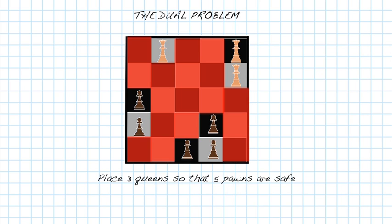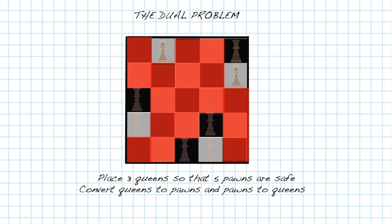Why does this help? Well, if we can put down three queens so that five pawns are safe, all we have to do is convert the queens to pawns and the pawns to queens, and we return to our original problem.